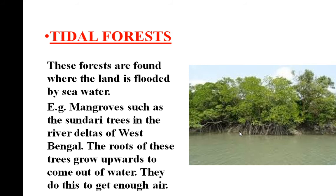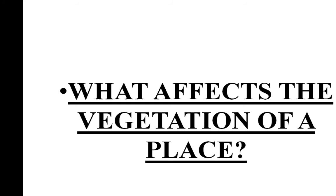We have now covered the five main types of forests: Coniferous Forest, Evergreen Forest, Deciduous Forest, Thorny and Scrub Forest, and Tidal Forest. Factors such as temperature and rainfall in a place affect the kind of forest that is found there. Because different places have different temperatures and amounts of rainfall, we have different types of vegetation or forests.